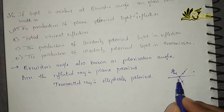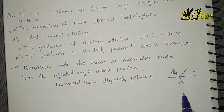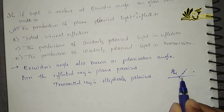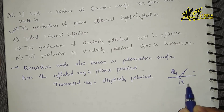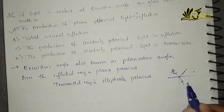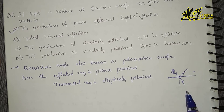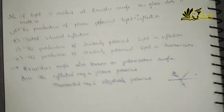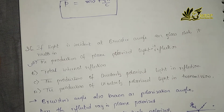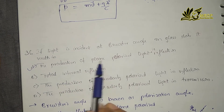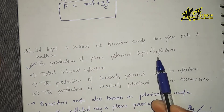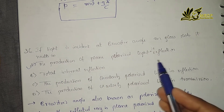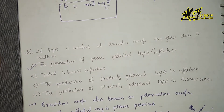The transmitted ray will be elliptically polarized based on the medium in which the light is getting transmitted. So the correct option is A: it is the production of plane polarized light in reflection.